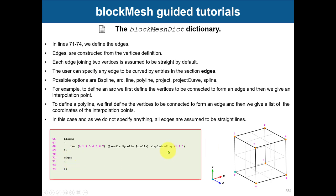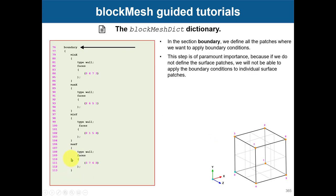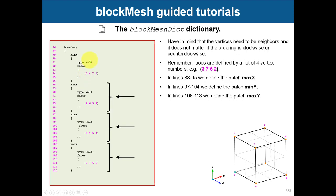There is an entry called 'edges' where you can add curved edges, such as a circle or a spline. If you don't put anything, by default everything is straight lines. If you want to know how to add curved edges, go to the supplement. At the bottom you find the 'boundary' entry — here you give a name and a type to the boundary patches. You select faces and define them by their vertex indices — for example, a face made out of vertices 0, 4, 7, 3. You call it, say, 'minX', assign a type, and that's all. You are assigning boundaries at meshing time.